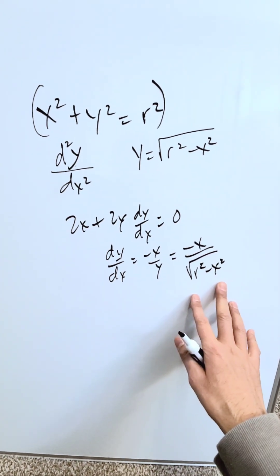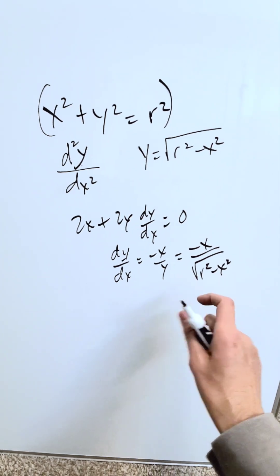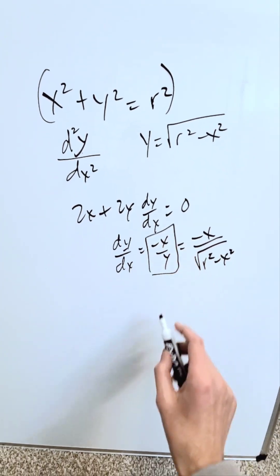You can do the second order derivative of this using the quotient rule and it will be an extra amount of work. If you just use this, it will be so much easier.